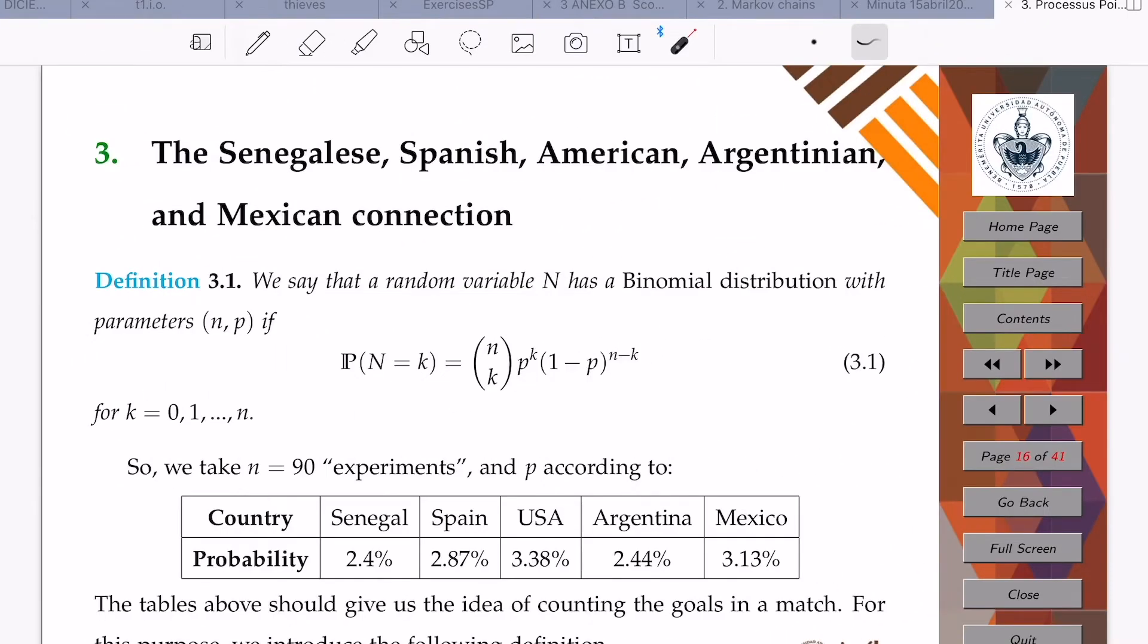The common pattern we're looking for is called binomial distribution with parameters N and P. A binomial random variable is a variable that counts the number of goals that are recorded in the score. If we take N equal to 90 experiments and P equal to the probability of seeing a goal during one minute, these are the probabilities for each of the leagues just quoted.